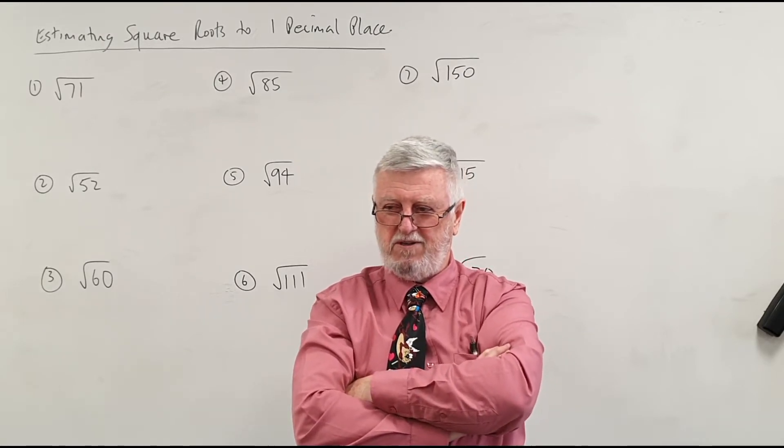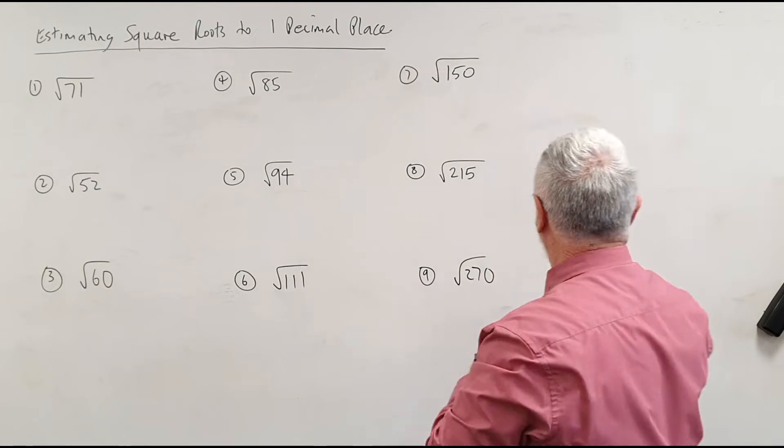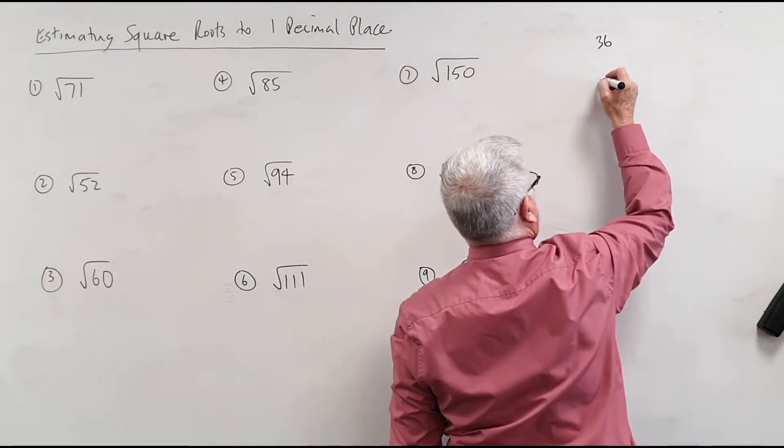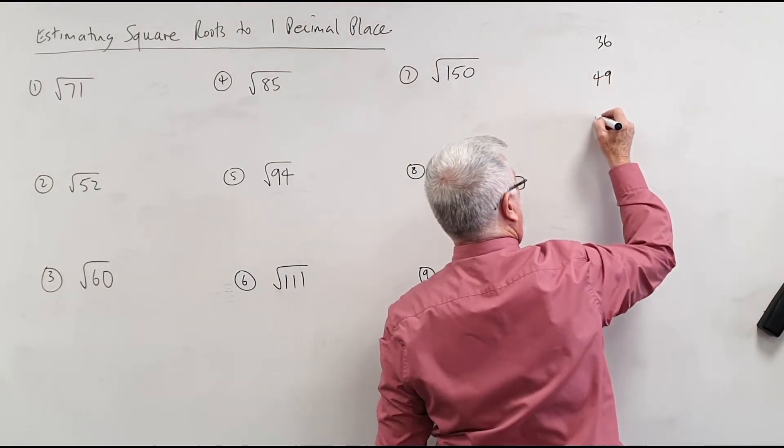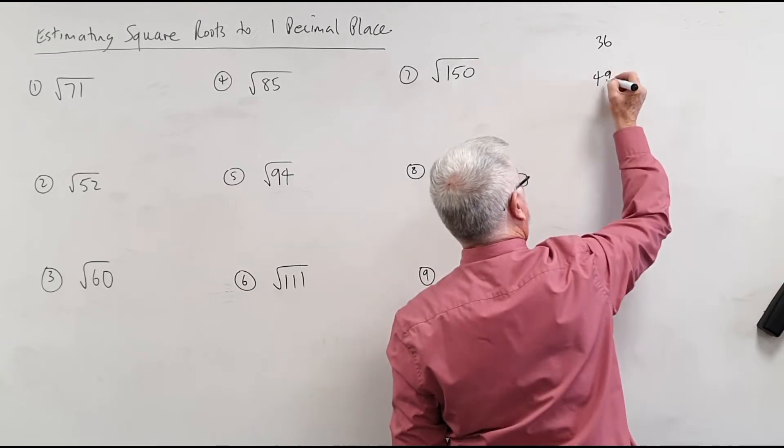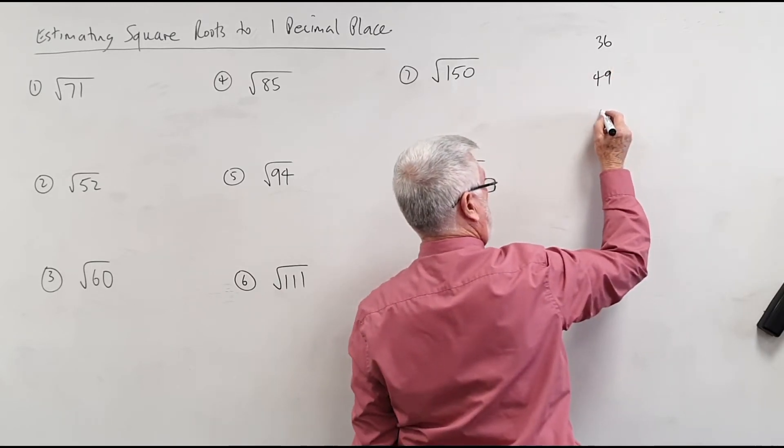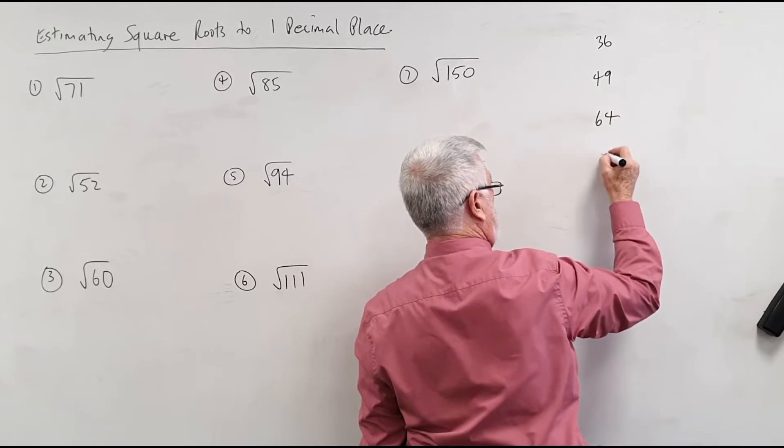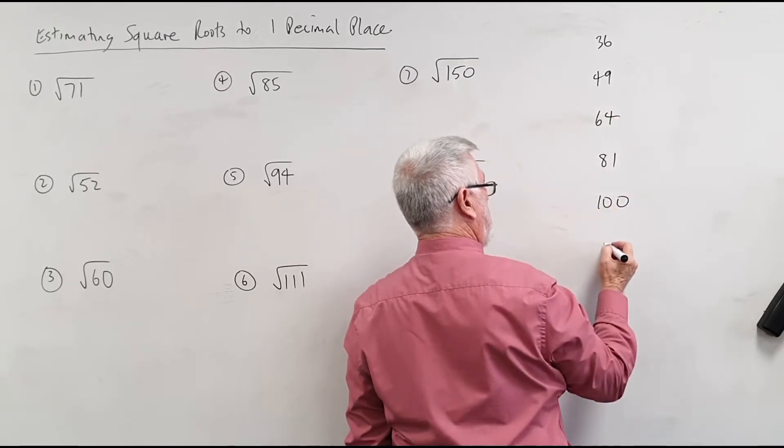How many can Jake tell me? If I said, of course you're going to have 36 which is 6 squared, 49. Jake, keep going for me. 6 squared, 7 squared, 8 squared, 9 squared 81, 10 squared, 11 squared.